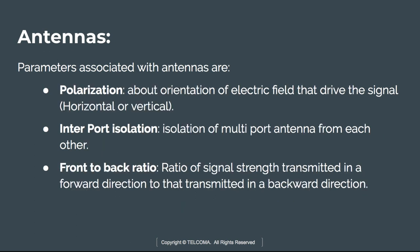The next parameter is polarization. Polarization defines the orientation of the electric field that drives the signal transmission. Polarization may be either horizontal or vertical. There are single and dual polarized antenna versions. A single polarized antenna responds to only one orientation, while a dual polarized antenna responds to both orientations and has a high traffic handling capability.